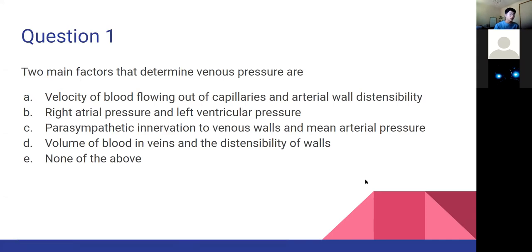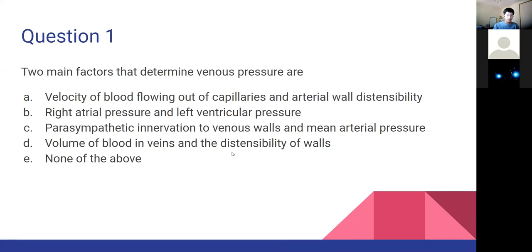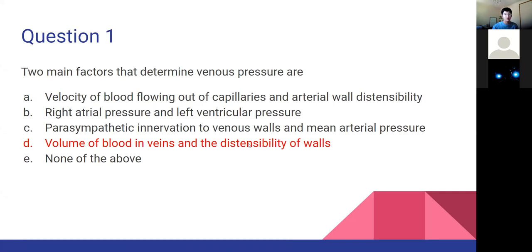Practice question: what are the two main factors that determine venous pressure? The answer is D: the two main factors are how much blood we have and how distensible or stretchable the walls are. Distensibility refers to compliance - if they're easily distensible, it's a lot easier to stretch them. And volume of blood: if we have more volume, this will increase our pressure.